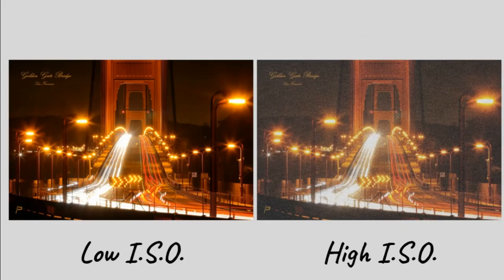Take a look at the two pictures of the Golden Gate Bridge. Notice the image on the left. It's shot with a low ISO. The image to the right is taken with a high ISO. So it's noisy or grainy.